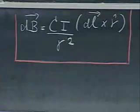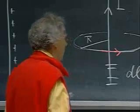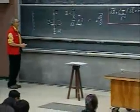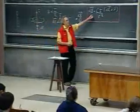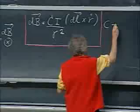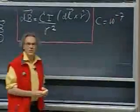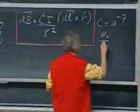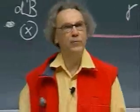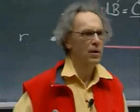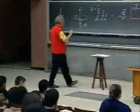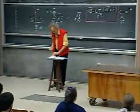You can do experiments and measure the magnetic field in the vicinity of wires, and this formalism works. You calculate the individual contributions of all these little elements dL, do an integration, and the formalism works. You can measure what the constant c is. In SI units, c is 10⁻⁷. We write c as μ₀ divided by 4π, and we call μ₀ the permeability of free space.